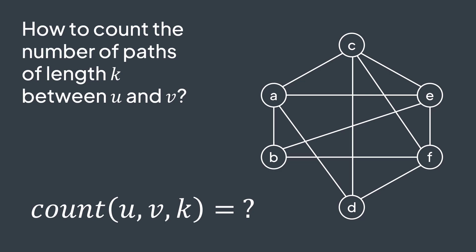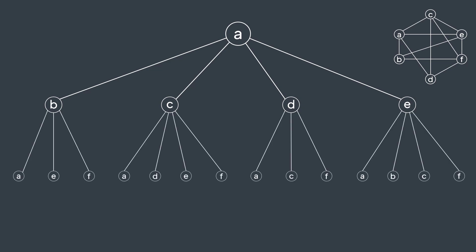For example, with a, d, 3, we start at a. From a we can go to b, c, d and e, four new branches. These represent paths of length one. We do the same thing from each node to get paths of length two. From b we can go to a, e and f, from c we can go to a, d, e and f, from d we can go to a, c and f, and from e we can go to a, b, c and f. We got paths of length two.